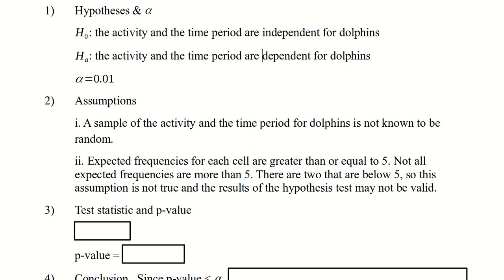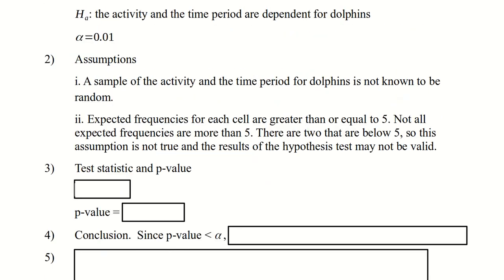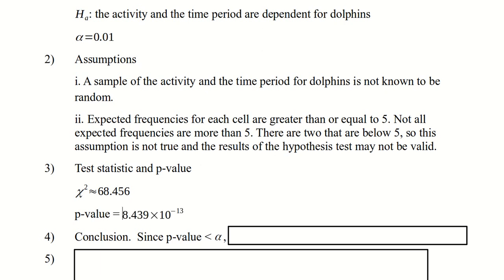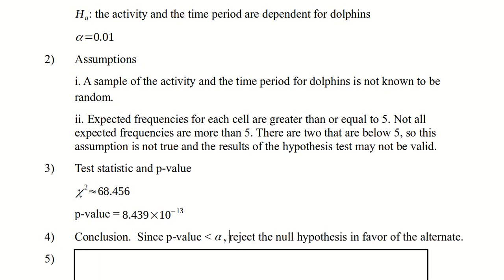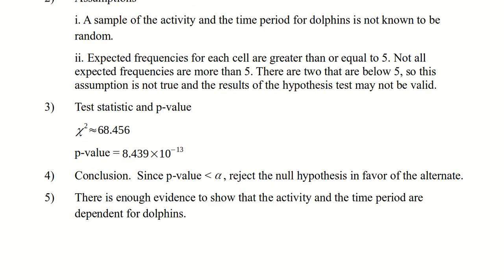We then use our calculators to find the test statistic and the p-value. Here the test statistic chi-squared is 68.456. That gives us a p-value that is ridiculously close to zero. Our alpha is 0.01, but even 0.01 is bigger than something that's essentially zero. So since the p-value is less than alpha, we're going to reject the null hypothesis in favor of the alternative, and we can say in words that there is enough evidence to show that the activity and time period are dependent for these dolphins.